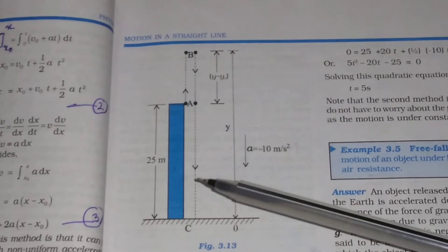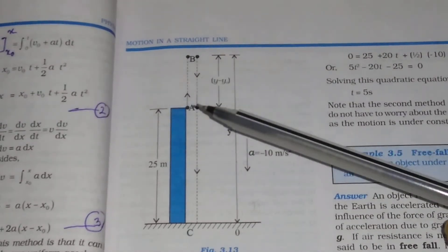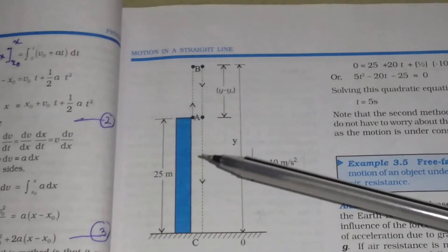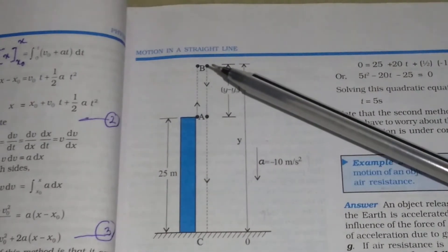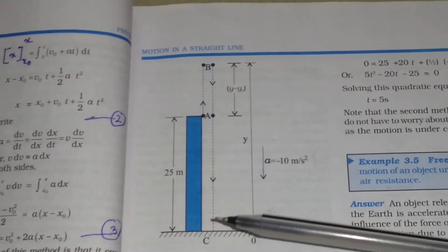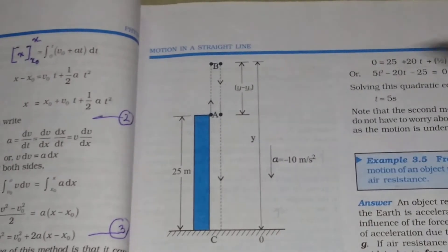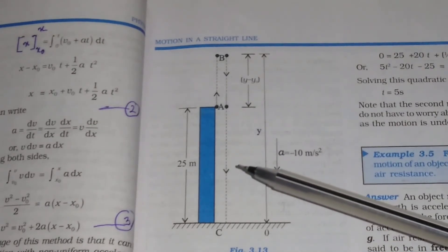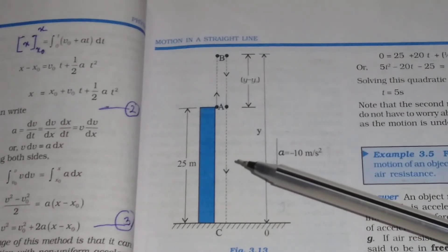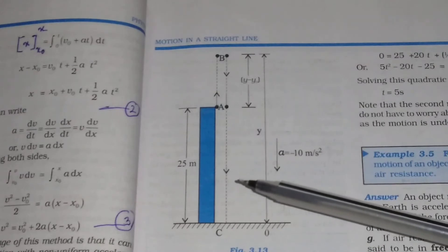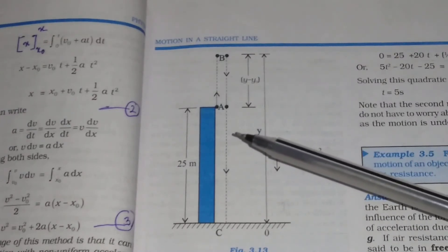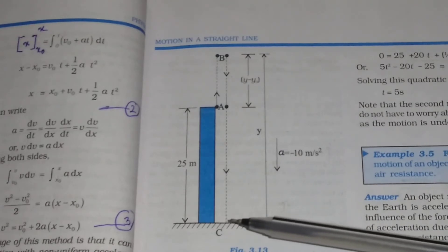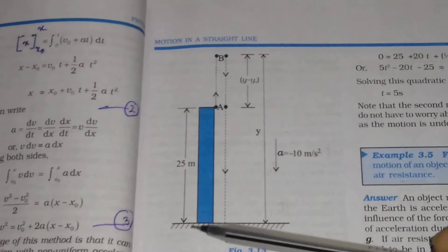In the first method, you calculate the upward motion of the ball from A to B, and the downward motion from B to C. You calculate the time taken for the upward motion T1 and the time taken for the downward motion T2, then add the total time T1 plus T2. In the second method, the total time can be calculated by noting the initial and final position of the ball with respect to the origin chosen — here, we have chosen the ground as the origin.